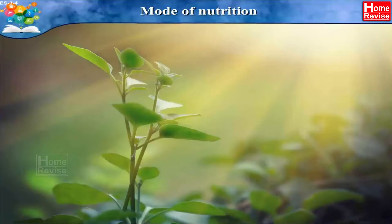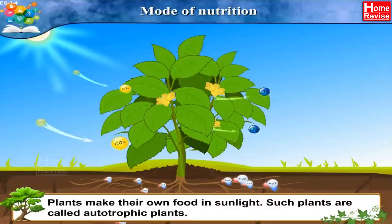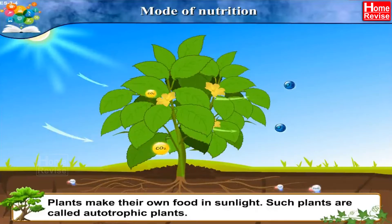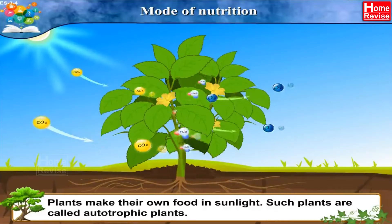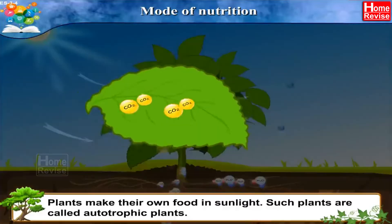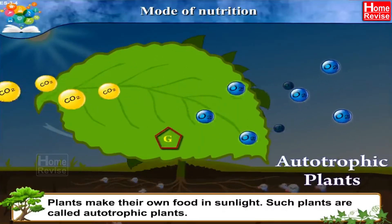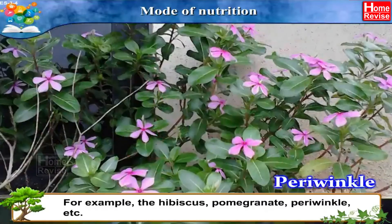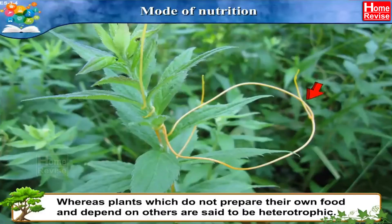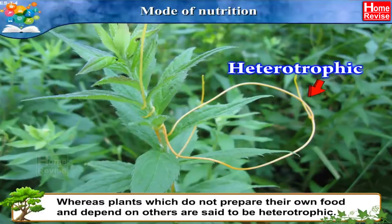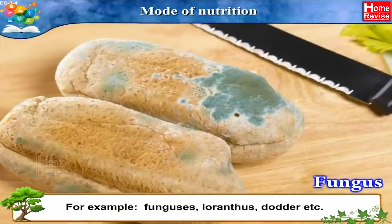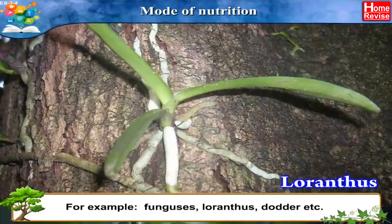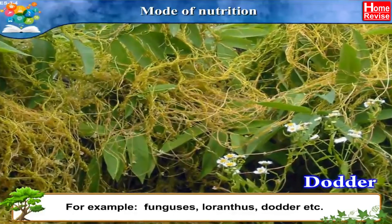Modes of nutrition — in fifth standard, you learned that plants make their own food in sunlight. Such plants are called autotrophic plants, for example hibiscus, pomegranate, periwinkle, etc. Whereas plants which do not prepare their own food and depend on others are said to be heterotrophic, for example fungi, loranthus, and others.